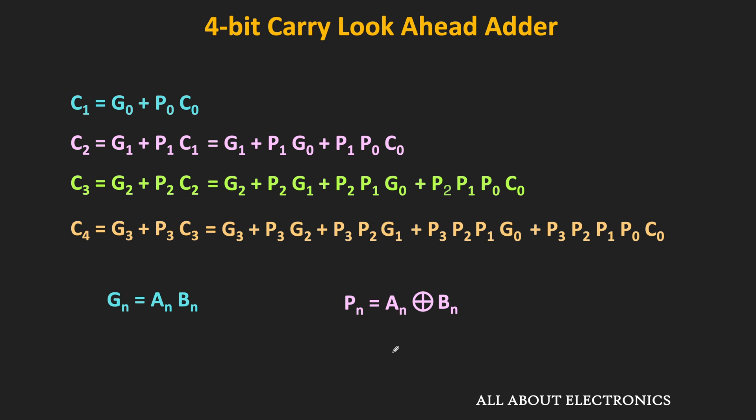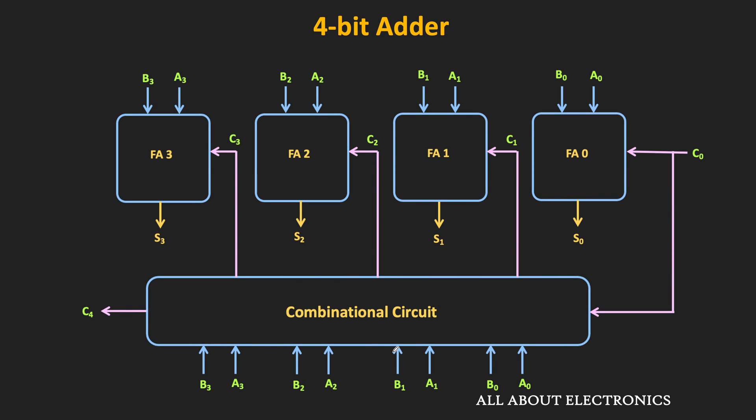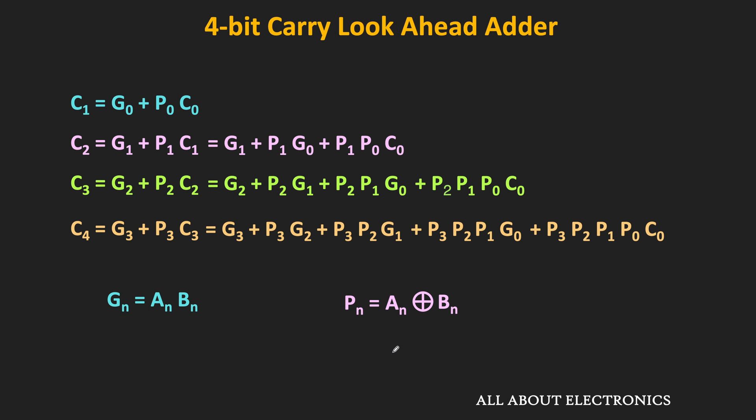If you look at all these expressions, they are in terms of Pn, Gn, and C0. In short, none of these expressions depend on the carry from the previous stage. Here Gn corresponds to An·Bn from the AND gate, while Pn corresponds to An XOR Bn. For each stage, these Gn and Pn can be implemented using one AND gate and one XOR gate. If we implement these four expressions using a combinational circuit, we can easily generate the carries for each adder.